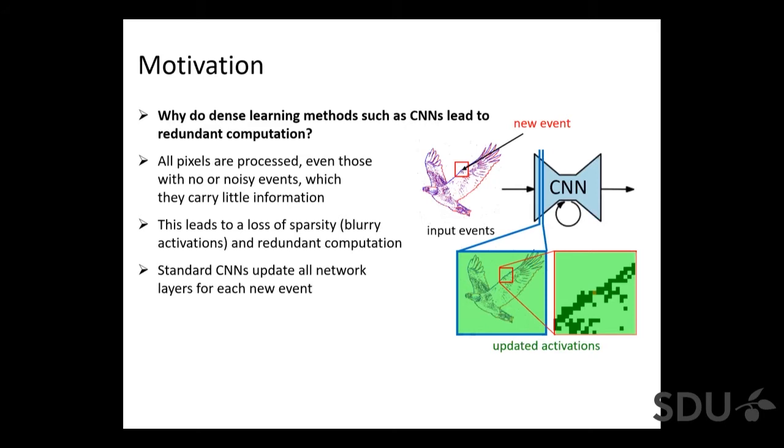In addition we have another effect which leads to redundant computation. Let us now imagine a scenario where we want to generate a network prediction for each new event. A classical method would solve this by reprocessing the whole input each time a new event arrives. However, clearly this is redundant since a new event only indicates a local change in the representation and does not affect the whole image. So actually reprocessing the whole image is kind of redundant. As you can see at different layers here, the whole activation maps have to be updated. The activations that are updated are here indicated in green.